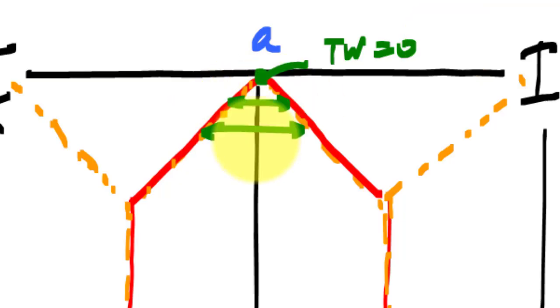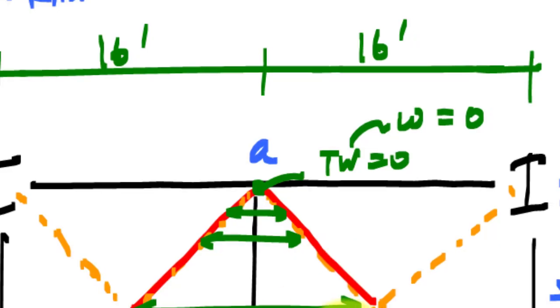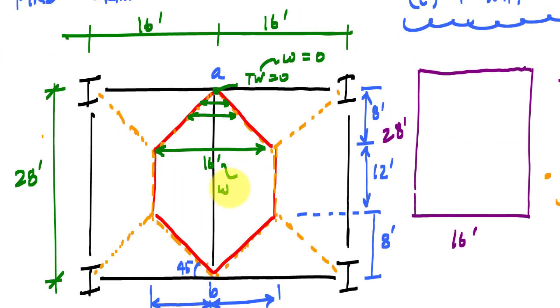In fact, if I zoom in, I'll notice that here my tributary width here is zero, and then it varies linearly all the way until I get to a maximum tributary width of 16 feet. Where my tributary width is zero, my distributed load is zero, and it's going to vary linearly until I get to this maximum tributary width of 16 feet.